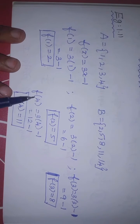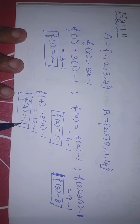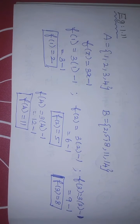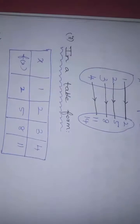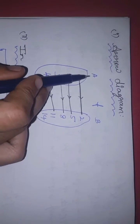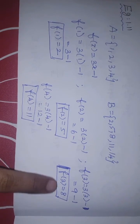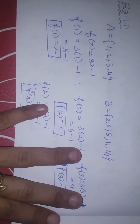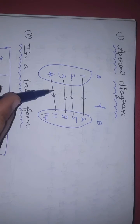Next, x = 4: f(4) = 3 × 4 − 1 = 12 − 1 = 11. So f(4) = 11. Now we answer the following representations. First, the arrow diagram: 1 maps to 2, 2 maps to 5, 3 maps to 8, 4 maps to 11. The arrow diagram is completed.